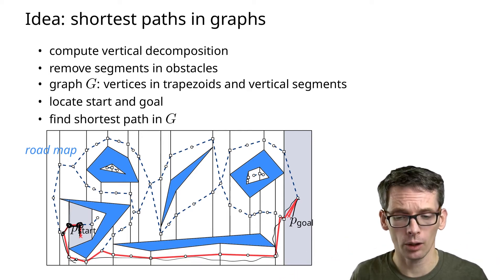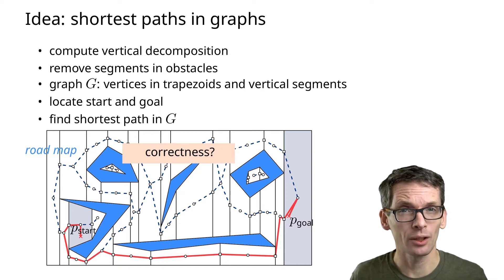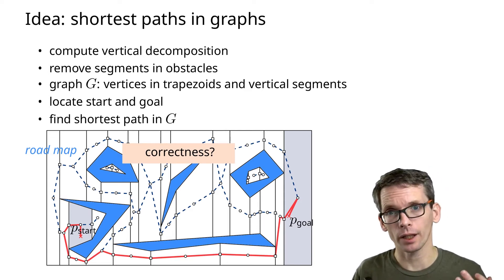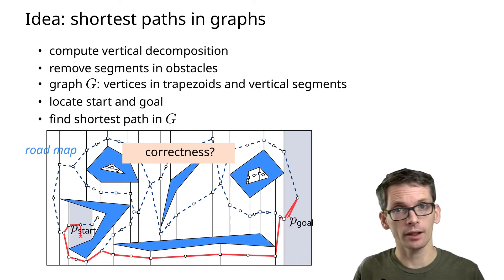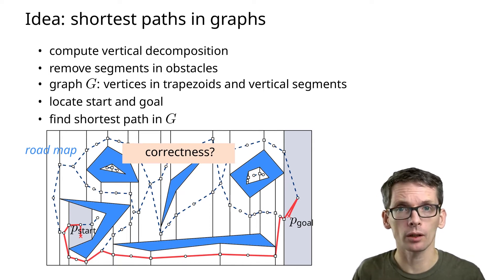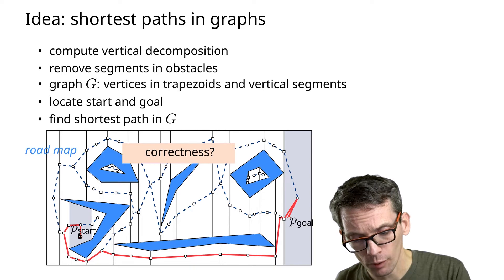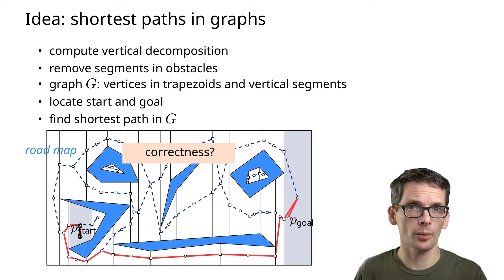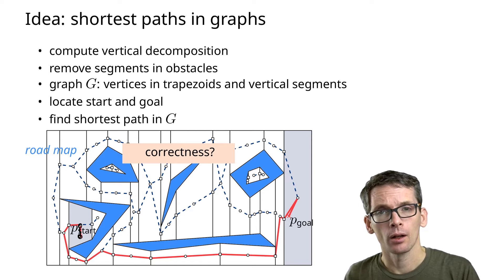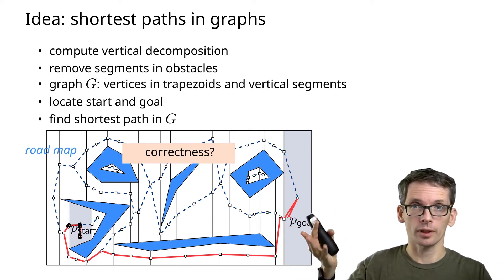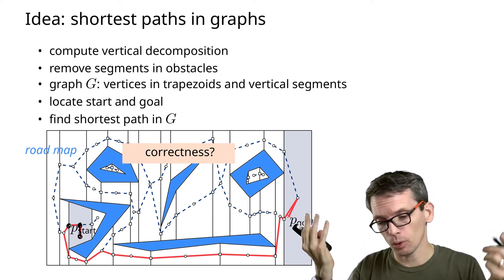Is this algorithm correct? We need to make sure that if there is a path, we also find a path, and that the path we find does not hit any obstacles. Why does the path we are using not hit obstacles? From the start to a position in the same trapezoid — a trapezoid is a convex object, so I cannot hit anything. Likewise, any two vertices that are both part of the same trapezoid: since the trapezoid is convex, everything in between is also in the trapezoid, so we're fine. The same argument applies for anything on this path — our path does not hit any obstacles.